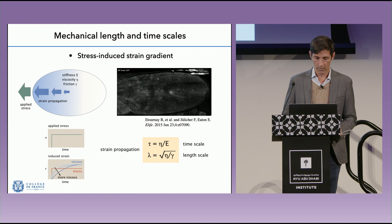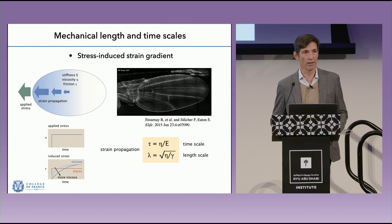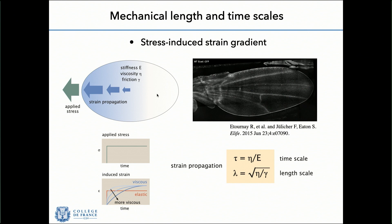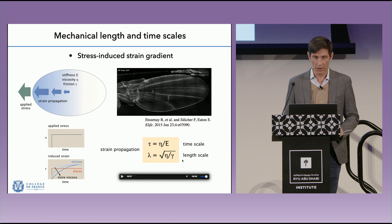Going back to computing time scales and length scales — now with mechanics rather than chemistry. If you apply a stress to a material such as a cell or tissue and ask how deformation propagates, it will propagate depending on the viscoelastic material properties: stiffness, viscosity, and friction with the embedding medium. With those properties you can compute a time scale as the ratio of viscosity over stiffness, and a length scale as the square root of viscosity over friction. So from a purely mechanical point of view it is possible to define characteristic time scales and length scales.